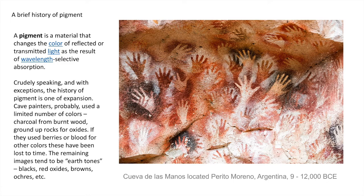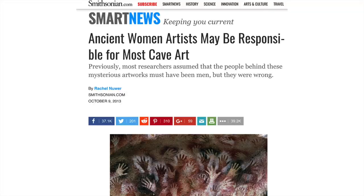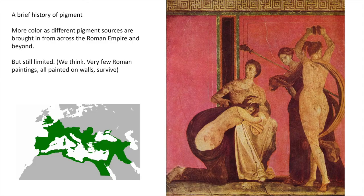Broadly speaking, and with some exceptions, the history of pigment is one of constant expansion — expansion of the numbers of colors. The material used to make color is pigment, usually minerals or other materials or chemicals. Here you can see an image of a cave painting from Argentina from about 9,000 to 12,000 BCE. Pigment is a material that changes the color of reflected or transmitted light as a result of wavelength-selective absorption — basically, how much light is absorbed determines the color. Studies of handprint sizes in cave paintings suggest at least half of the artists were probably women, overturning many previous assumptions.